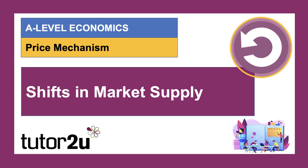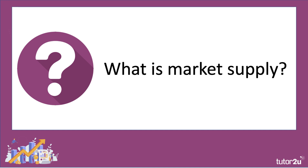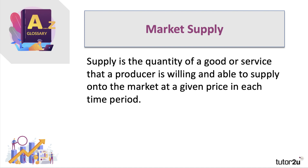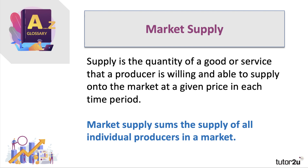What are the key factors that can cause a change in market supply for different goods and services? This short revision video takes you through the key points to help your understanding of this aspect of the price mechanism. First, what is market supply? It's the supply of a good or service that producers are willing and able to supply onto a market at a given price in each time period. Market supply sums the supply of all the individual producers in a market or industry.